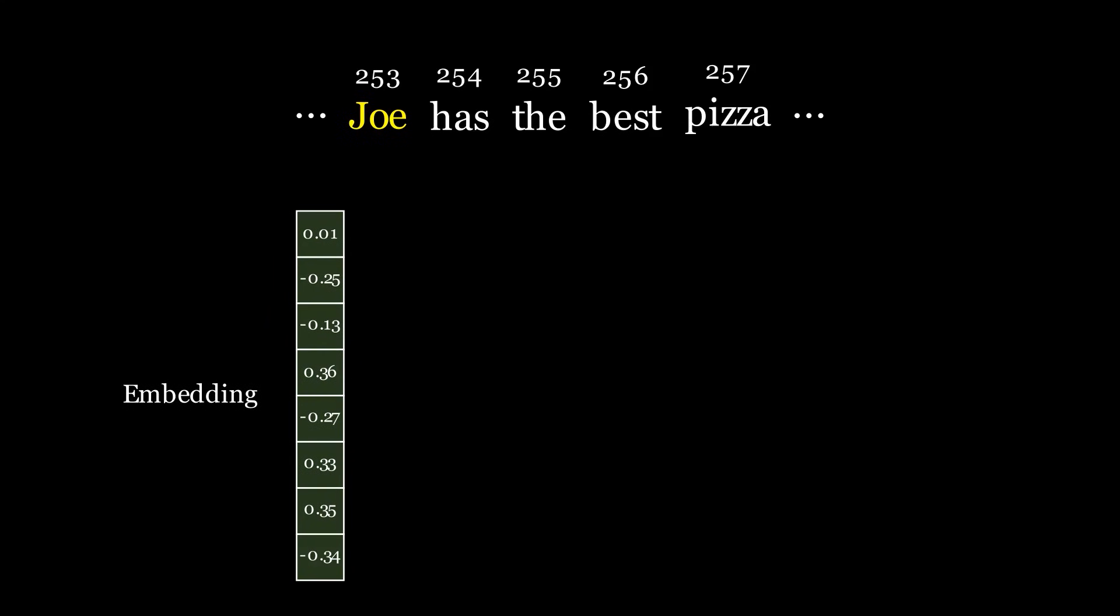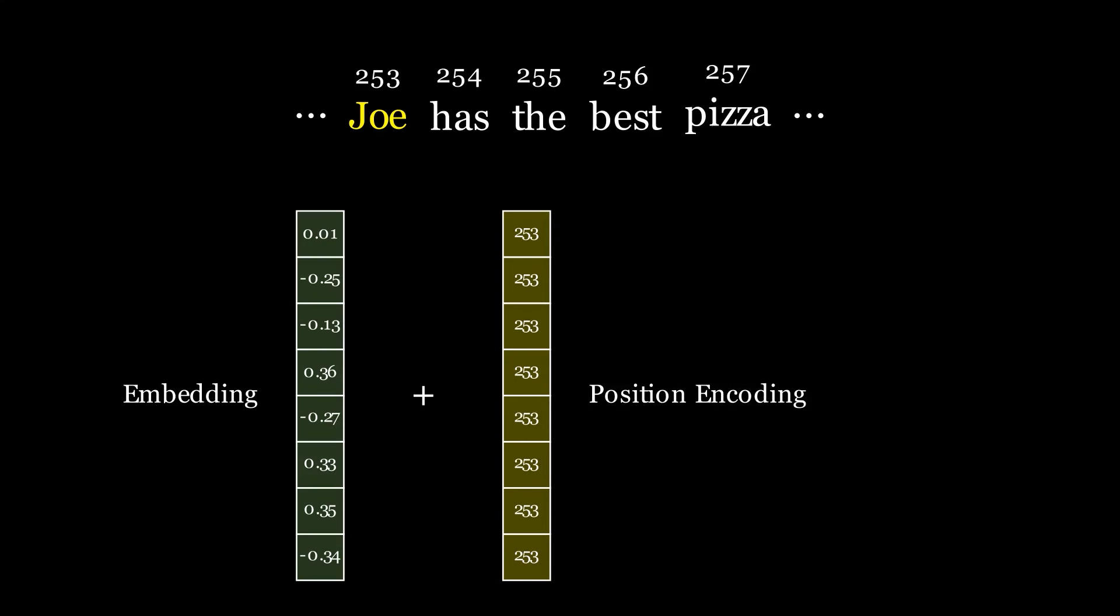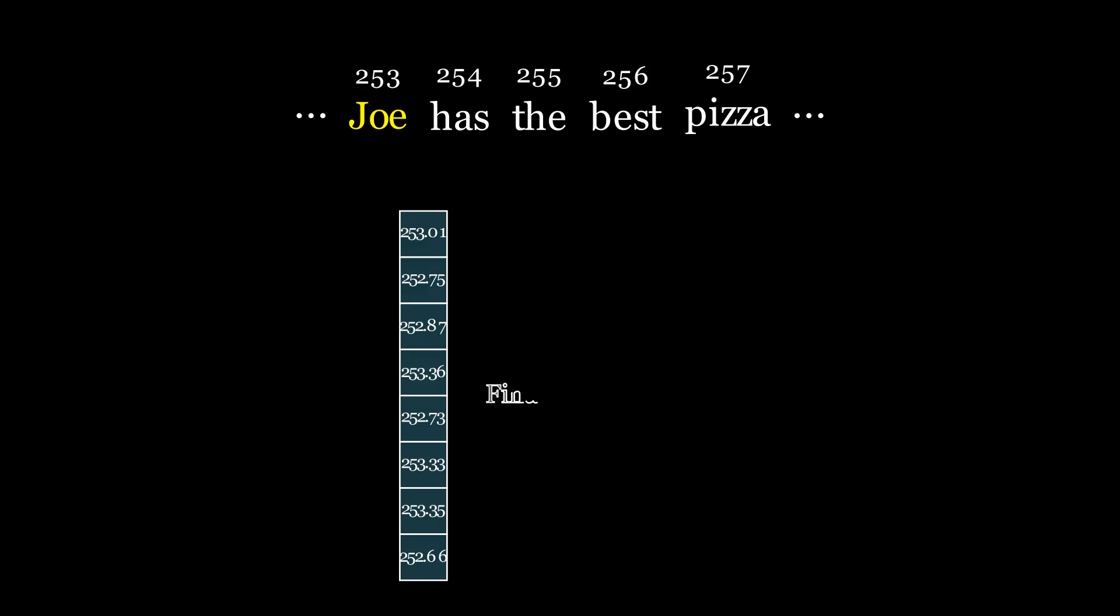But imagine if we have a longer sentence, a huge paragraph, and in the middle of the paragraph comes the sentence Joe has the best pizza. Now let's take Joe, convert it into embeddings, then add its position. Here, we run into a problem. We can see that the position was so large that it essentially took over the embeddings, and we have lost all the information from the embeddings.